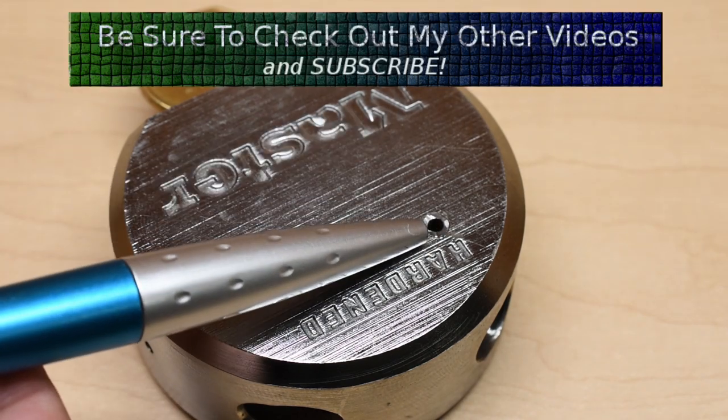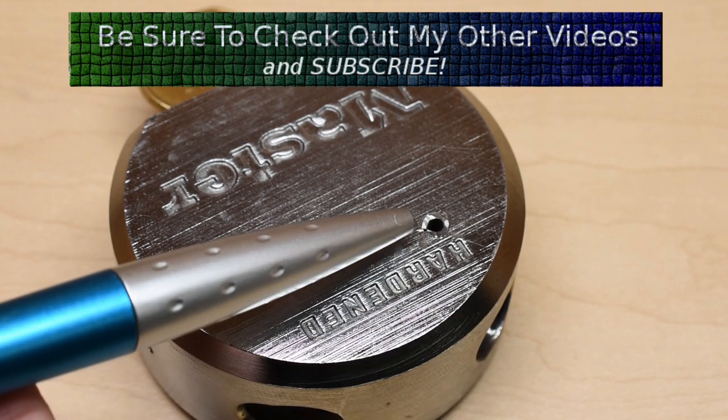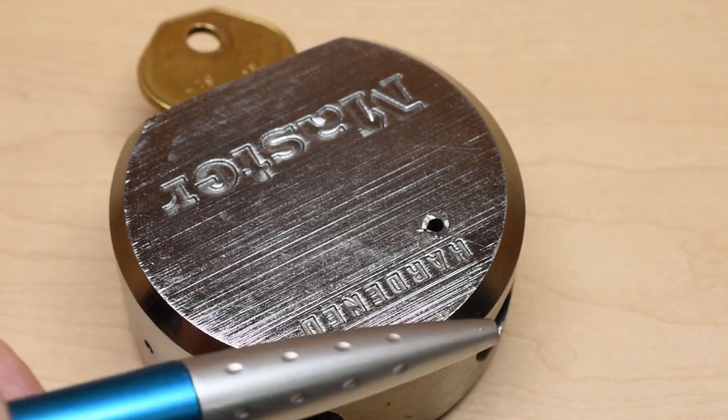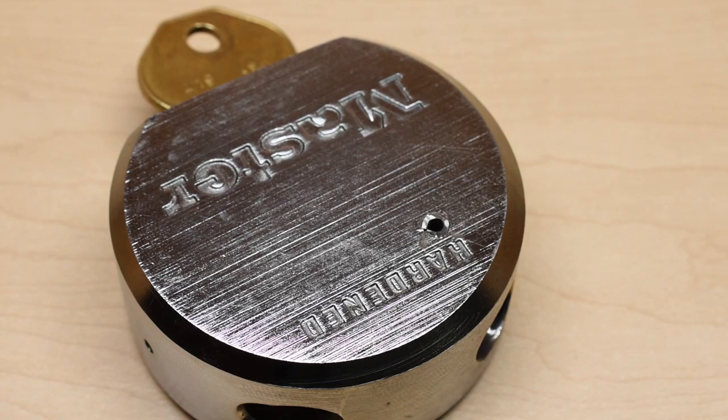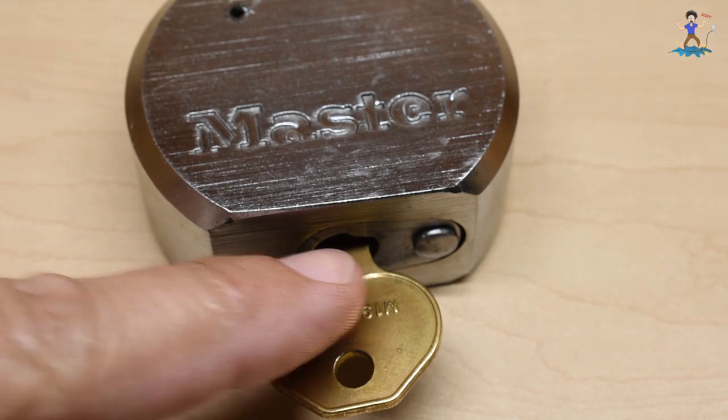It makes no difference if somebody even tried to pull that out because with the shackle in place it's not going to have any effect on anyone trying to get into this lock any easier. As usual the best way to get into these locks is through the key opening or the keyway.